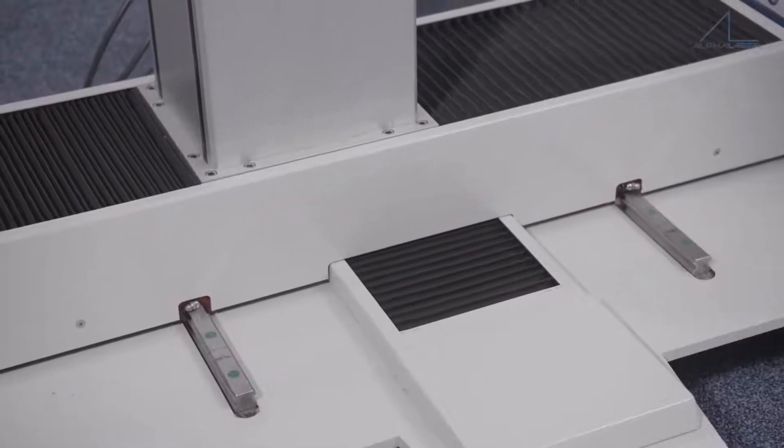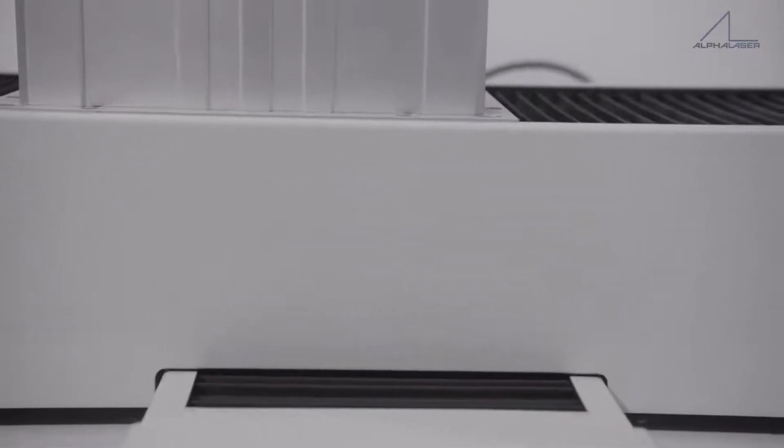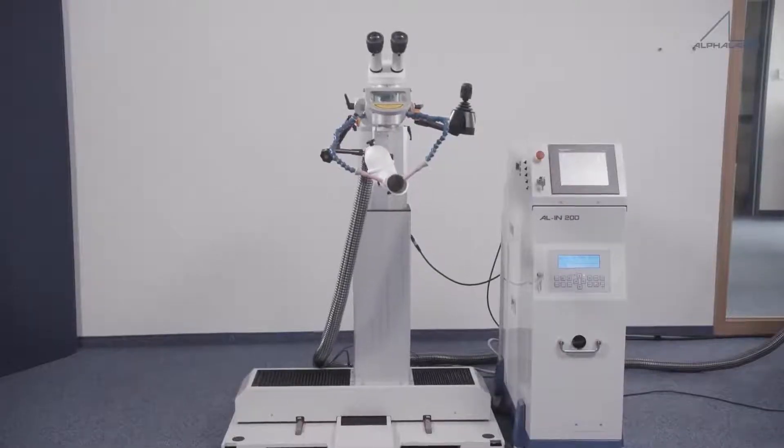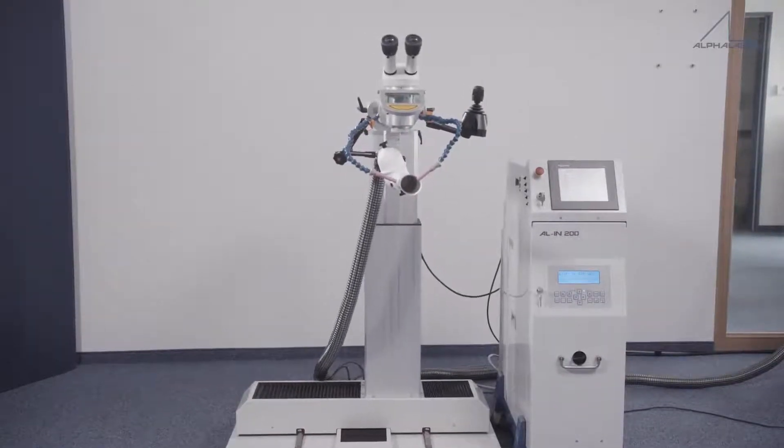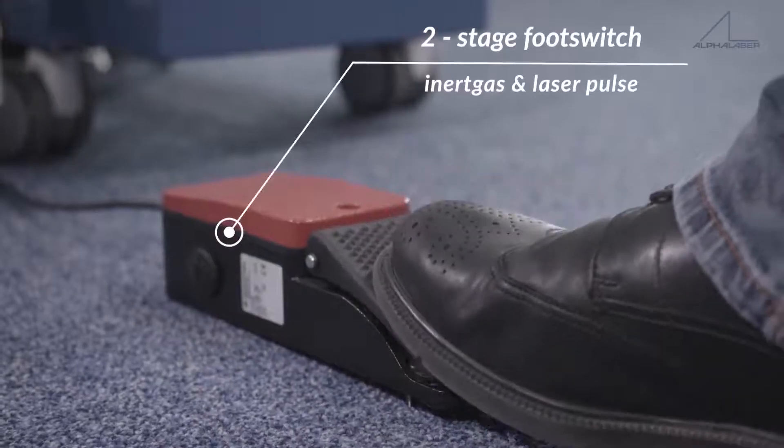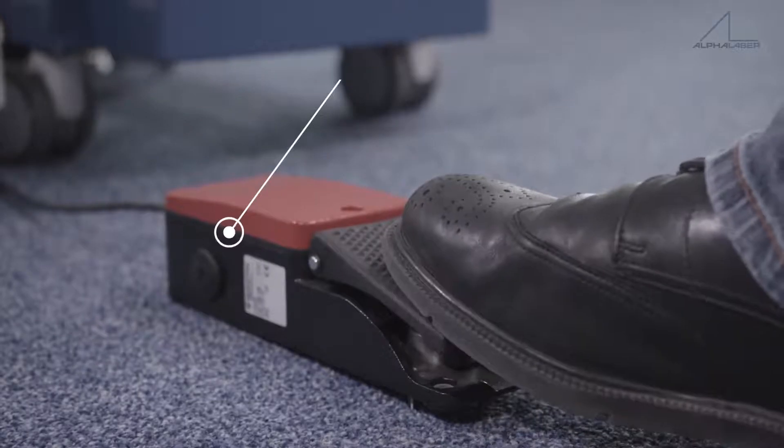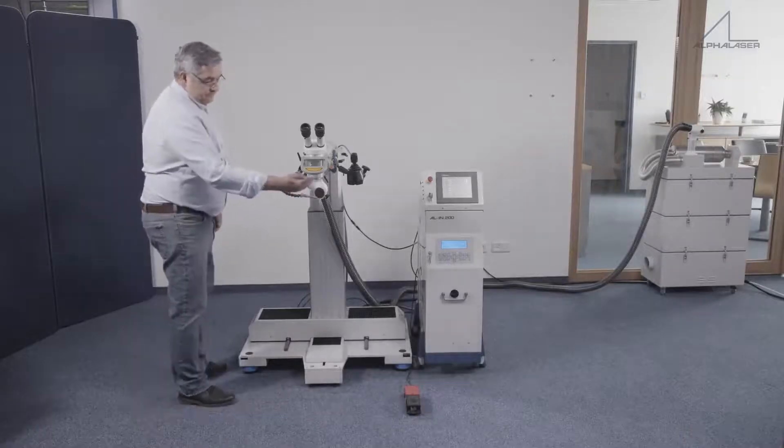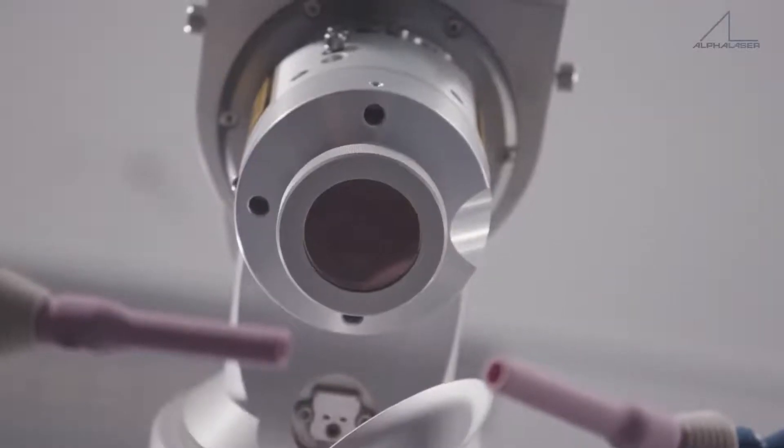A rocker switch on the joystick can also be used to control the optional rotary axes. The two-stage foot switch triggers the inert gas and then laser pulse, with fixed optics to direct the laser beam vertically onto the workpiece.